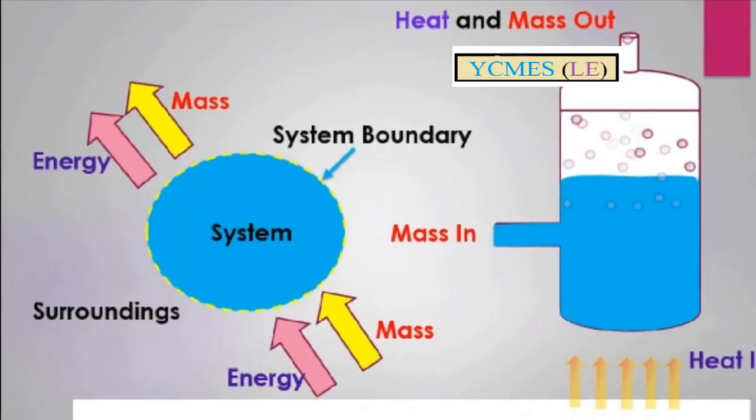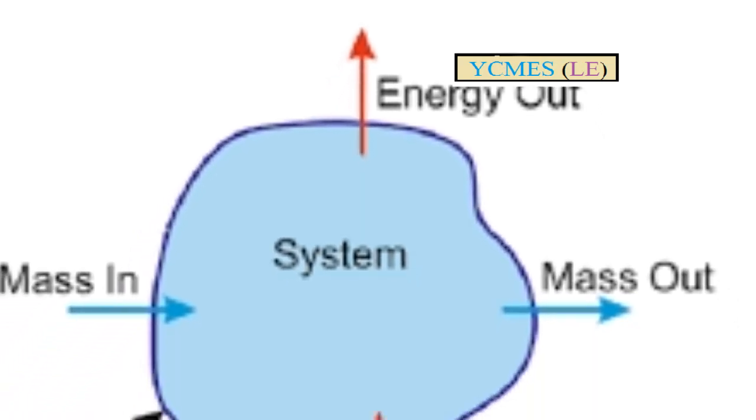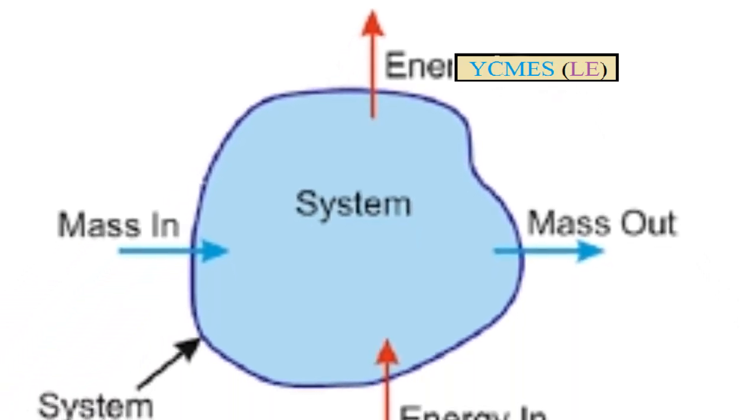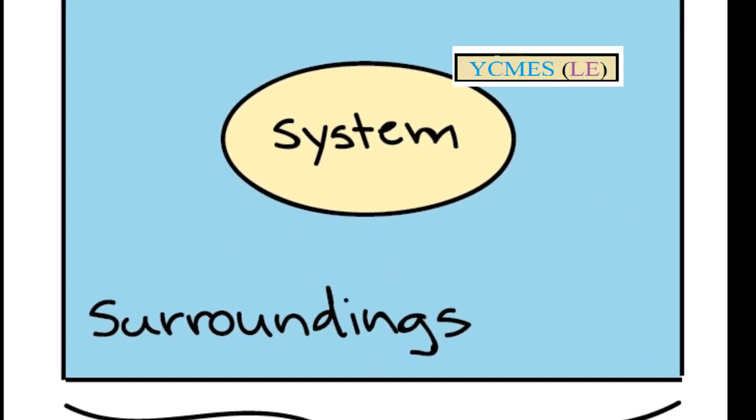In the system, we collect the matter. We need to separate the boundaries. In terms of the boundary, there is fixed boundary and movable boundary.